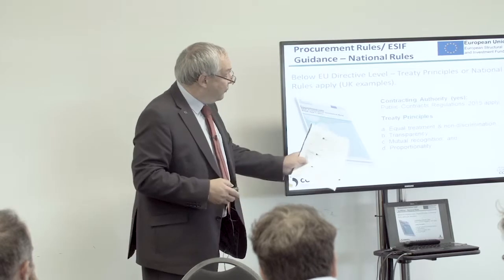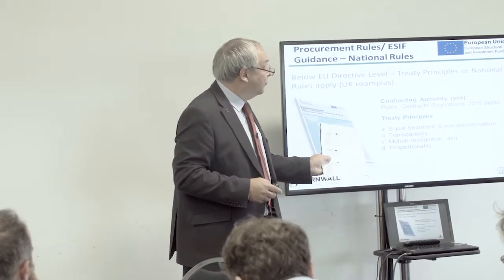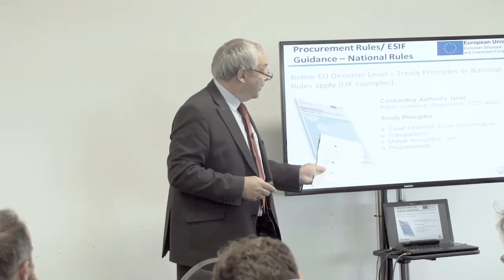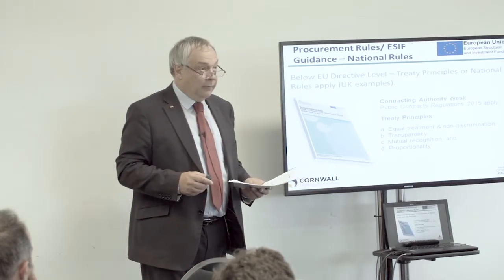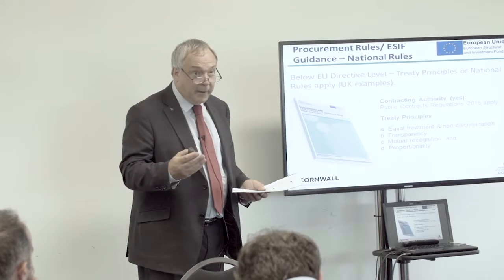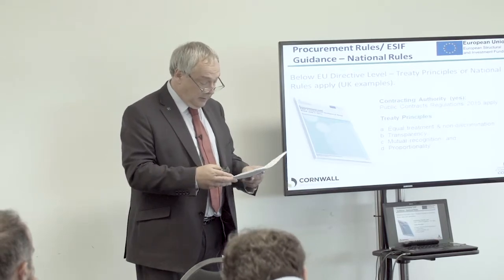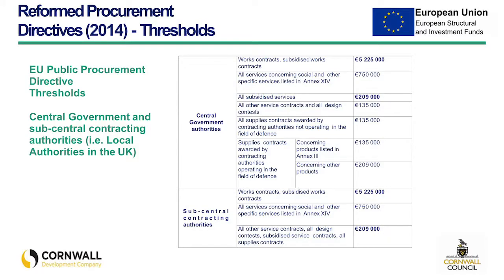Here are the four treaty principles: equal treatment, non-discrimination, transparency, mutual recognition, and proportionality. They are the principles defined in the procurement regulation. If you stick to all of those, you won't go too far wrong. These are the thresholds for public procurement — for contracting authorities. There are two categories: central government authorities and sub-central contracting authorities — so a sub-central contracting authority would be, for example, a local authority.